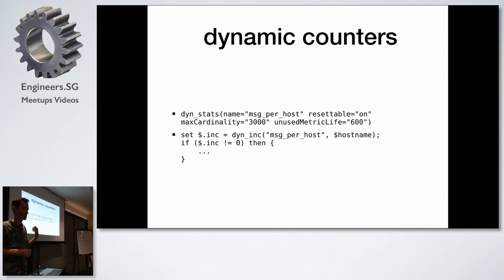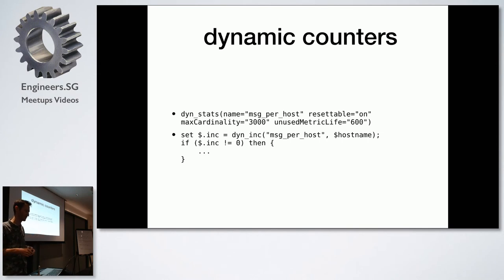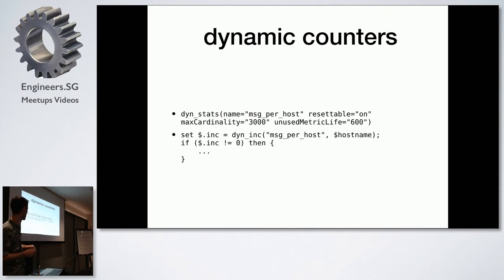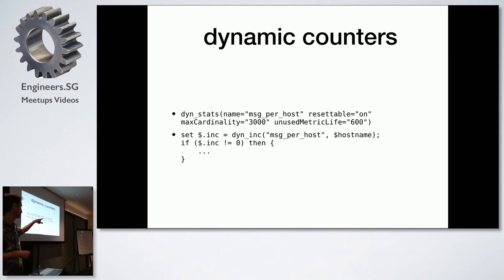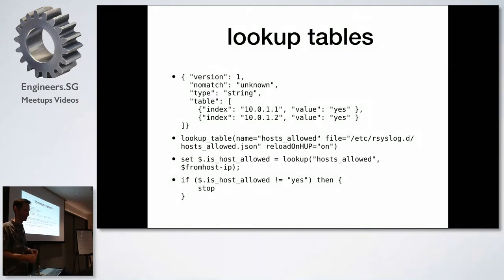One interesting thing is rsyslog supports dynamic counters, so you can actually count things flowing through rsyslog. For example, when multiple APIs are logging into rsyslog, you can count them internally and have those statistics on output via a special output module. Here's a small sample — it's self-describing. You can define a counter and then increase it by some variable. The host name is not an actual value here; the counter for that host name gets incremented one by one.